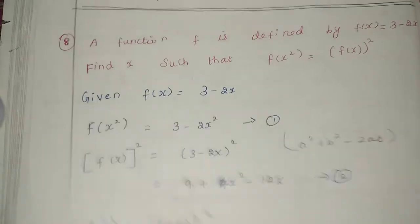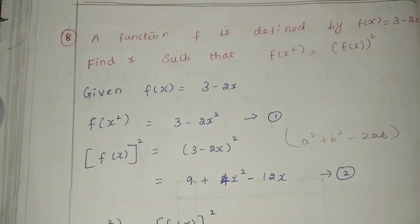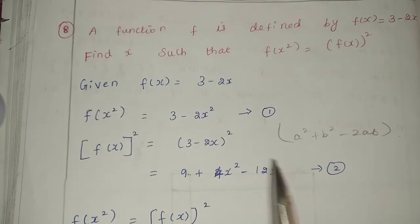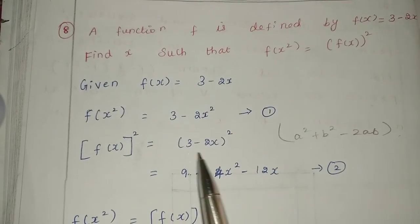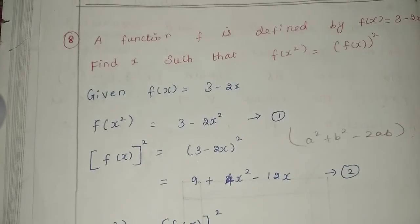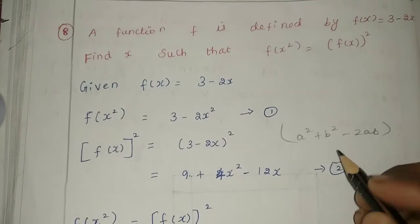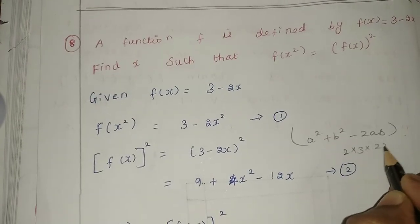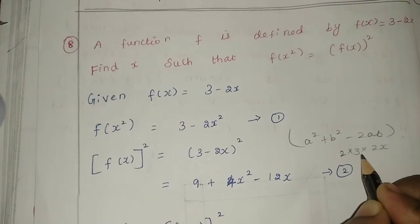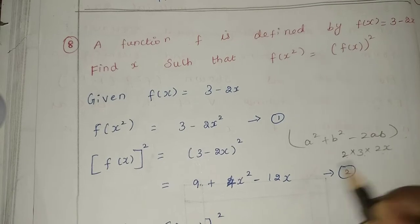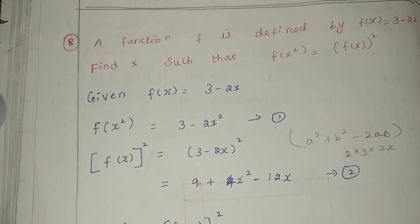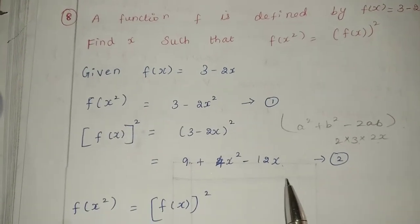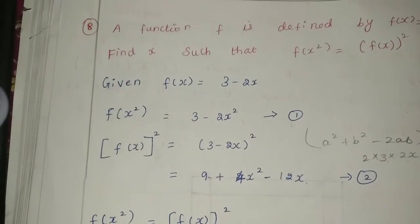Applying the formula: minus 2ab where a is 3 and b is 2x gives minus 2 times 3 times 2x, which is minus 12x. So f of x whole square equals 9 plus 4x squared minus 12x. This is the second equation.